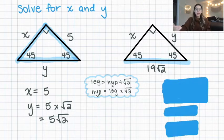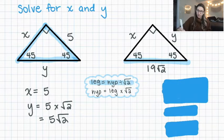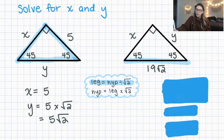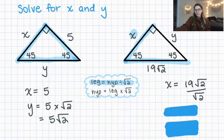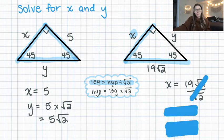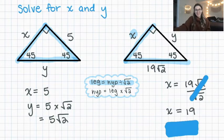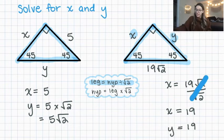In the second example, we're given the hypotenuse, which is 19√2. We need to go backwards to find the leg lengths. Each leg equals the hypotenuse divided by the square root of two, so x equals 19√2 divided by √2. The square roots of two cancel out, giving us x equals 19. Since both legs are equal, y also equals 19.